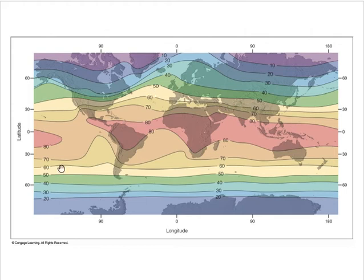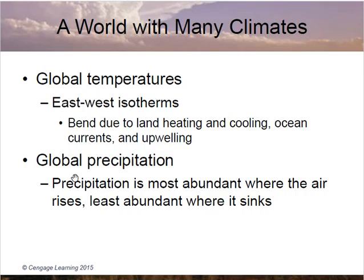In the southern latitudes, the isotherms are almost perfectly parallel with very little waviness, and that's directly due to the fact that there's hardly any landmass down there. Landmasses have a huge impact on temperature variation — that land versus ocean difference. To predict where you'll get the most moisture, look for global pressure zones: where air is rising at low pressure you get more precipitation, and where air is sinking at high pressure zones you get less precipitation.